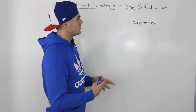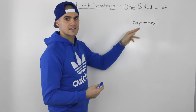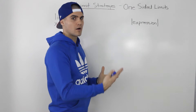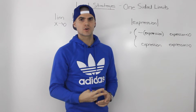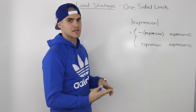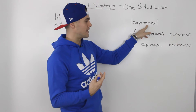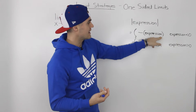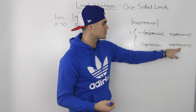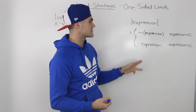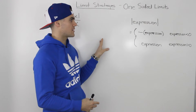Before we get into solving this limit, let's go over absolute value and how it works. If you have the absolute value of an expression and that expression is negative, we're going to change it to a positive number. If the expression is already positive, it just stays as its value. These two cases can be shown as a piecewise function: when the expression is less than zero, multiply it by negative one; when it's greater than zero, leave it as is.